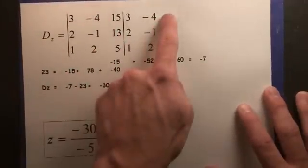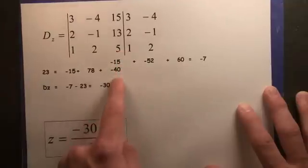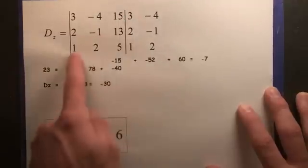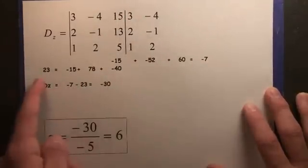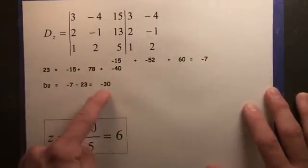Then we go back the other way. Multiply those, negative 40. Multiply these, 78. Multiply those, negative 15. Add them up, 23. Negative 7 minus 23 is negative 30.